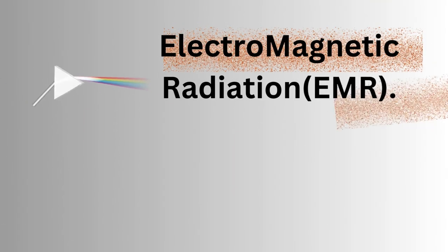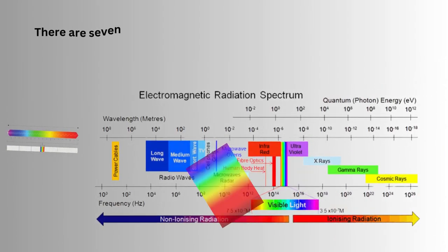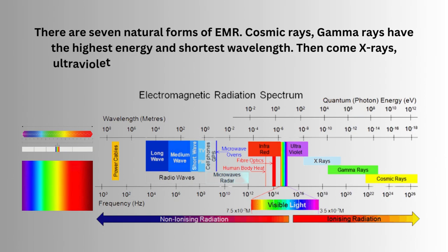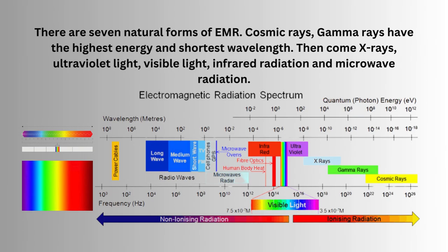Electromagnetic radiation (EMR). There are seven natural forms of EMR: cosmic rays, gamma rays have the highest energy and shortest wavelength, then come x-rays, ultraviolet light, visible light, infrared radiation, and microwave radiation.